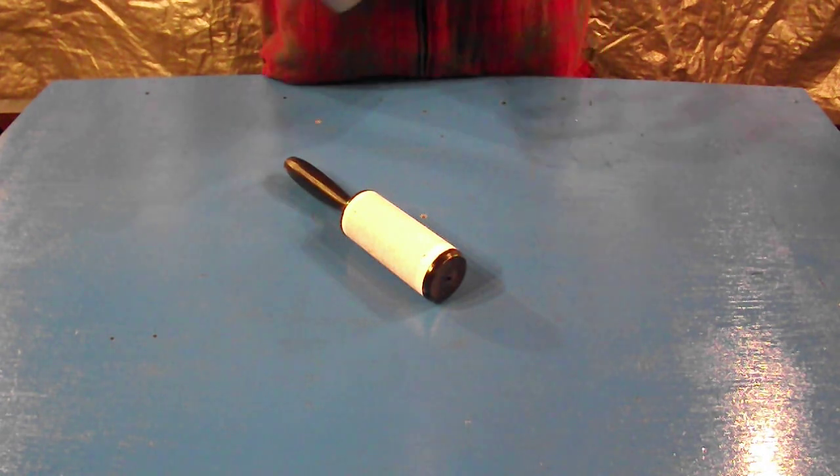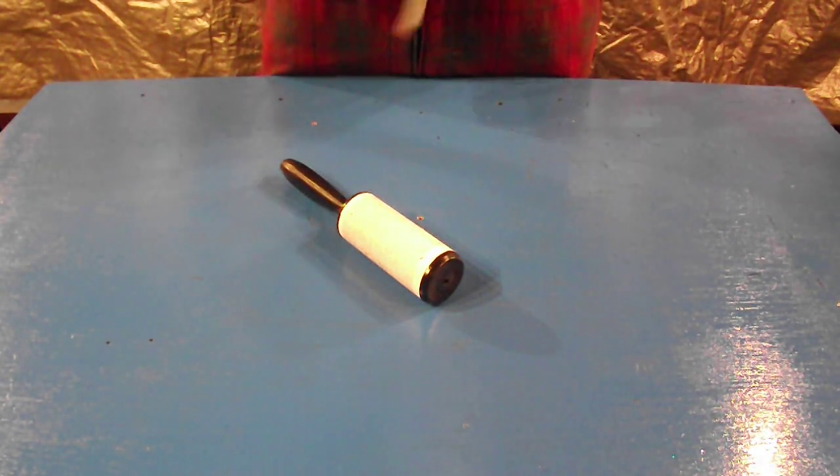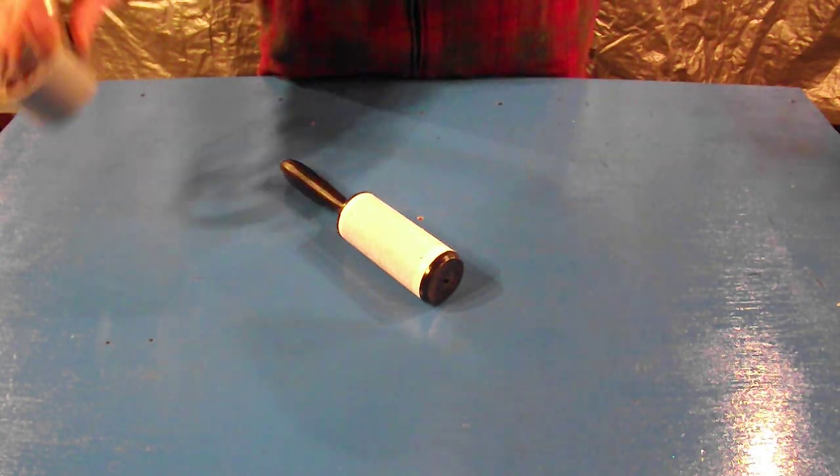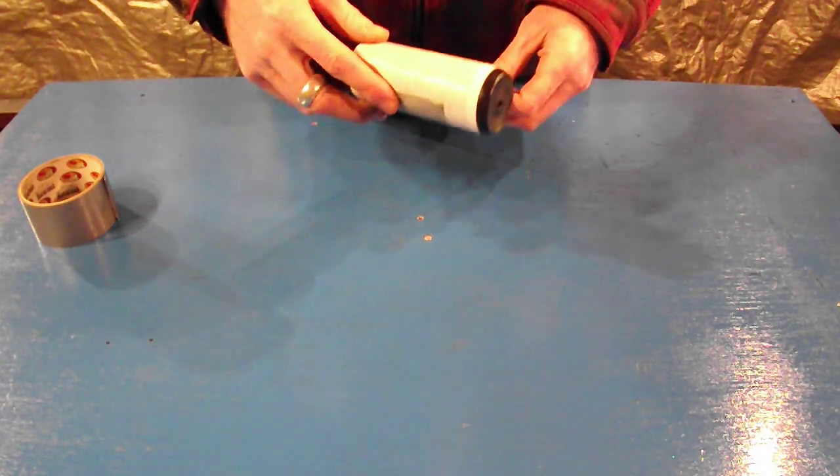I'm going to show you how to make a lint roller out of duct tape. We've all used duct tape to remove cat hair and lint from our clothes and everything else, so might as well make something very useful out of it.